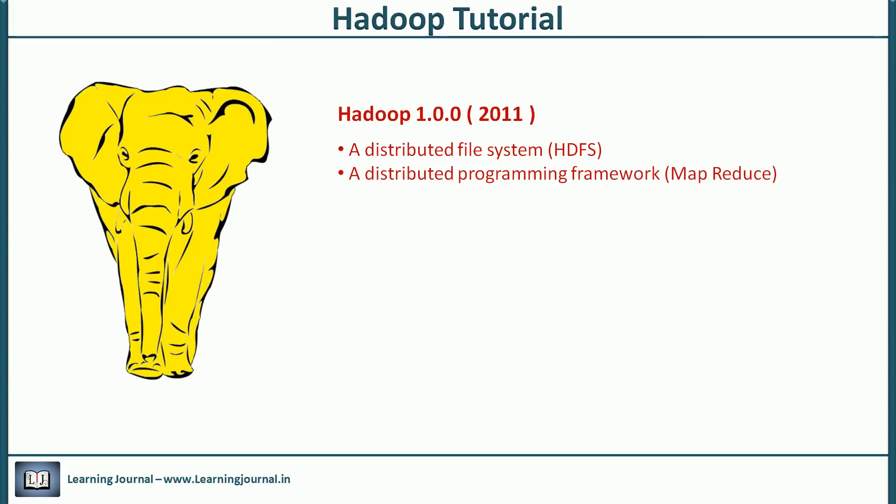After several iterations, Hadoop 1.0 came out in December 2011. Initially, Hadoop had just two core components: a distributed file system, called Hadoop Distributed File System (HDFS), and a distributed programming framework called MapReduce. Both of these are an implementation of those two Google papers.